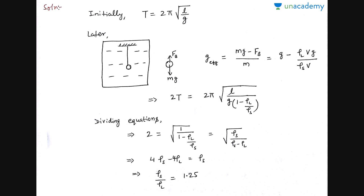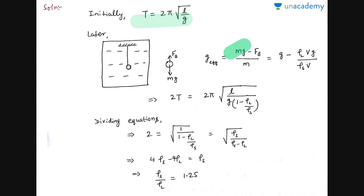In the second case, the entire pendulum is placed in a room filled with water. Now along with mg, a buoyancy force also acts on it. When the pendulum is slightly displaced, both the torque of mg and the torque of buoyancy force act. To calculate effective g: g_effective = net force / mass = (mg − buoyancy force) / mass. Buoyancy force = ρ_liquid · V · g. So g_effective = g(1 − ρ_L/ρ_S).